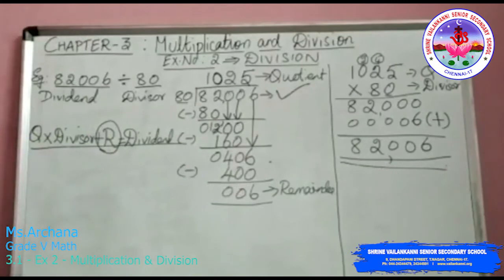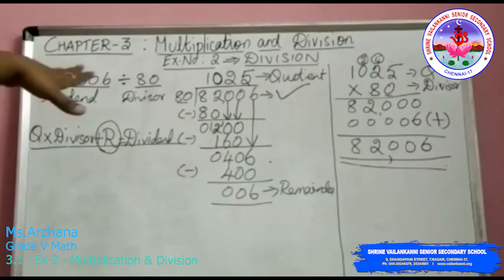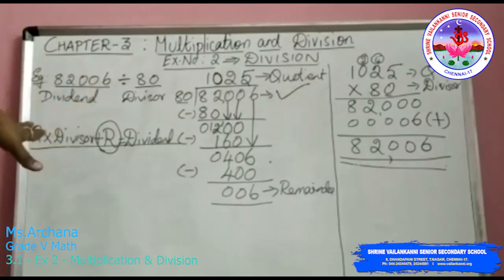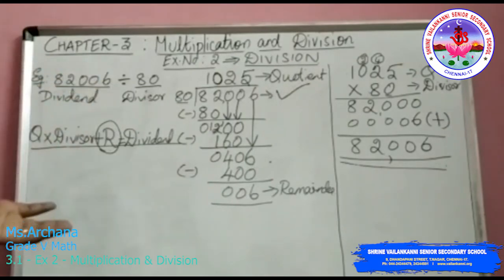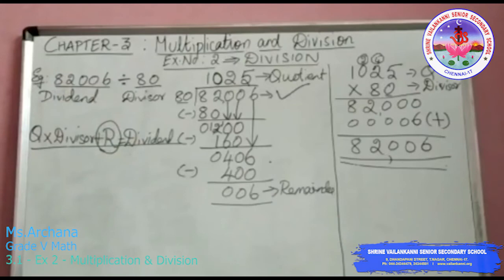So I hope you have understood how to do division. You can check your answer by multiplying the quotient with the divisor and adding the remainder, and that will give you the dividend value. Thank you.